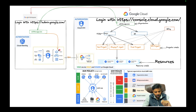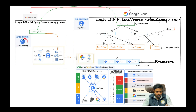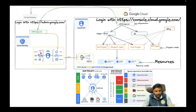Once you log into Google Workspace, you'll have users, groups, and org units — create them if you don't have them. Now, the main topic: Cloud Identity is the authentication process for users, groups, any third-party devices, and third-party application users — all of that can be authenticated through Cloud Identity.